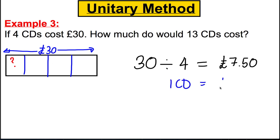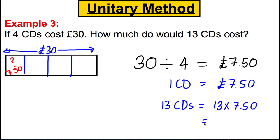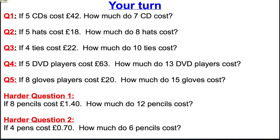So we know 1 CD costs £7.50. What must 13 CDs be? It'll be 13 multiplied by £7.50. Tap 13 times 7.5 into your calculator and you get 97.5 — translate that back to money: £97.50. Don't forget the zero at the end. These four videos have built up to quite complicated questions using the calculator. Here are a few for you to try yourself — I'll mark them in the lesson. Thank you for watching.